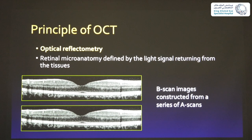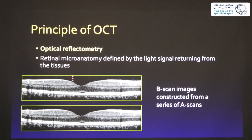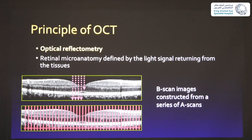How does OCT work? It uses the principle of optical reflectometry — you shine light at the retina and the light reflects back through a mirror. The speed at which the image reflects back determines what you see. You shine light across the retina in a series of B-scans. You can do this the old way, one B-scan at a time — this is what we call time domain OCT — or you can do this all at once, like in spectral domain OCT, which gives you a sharper image.